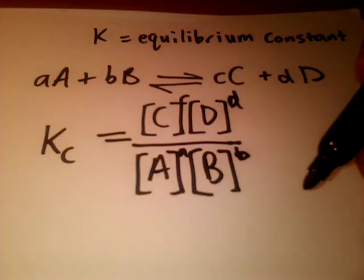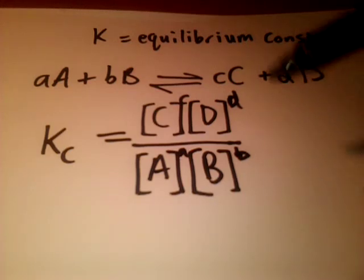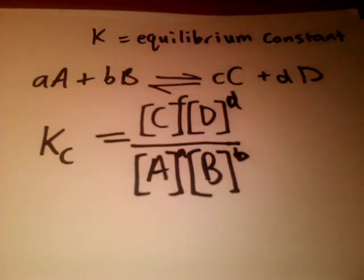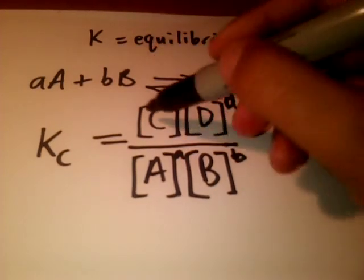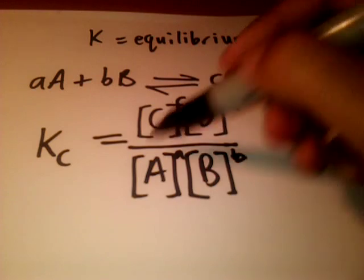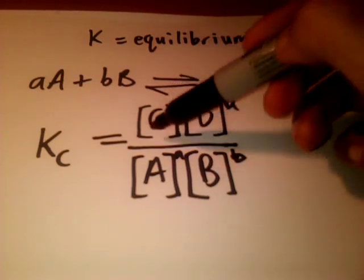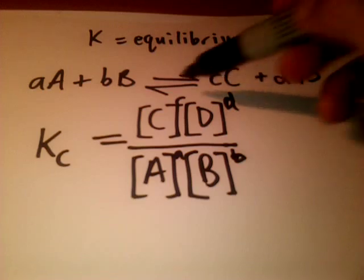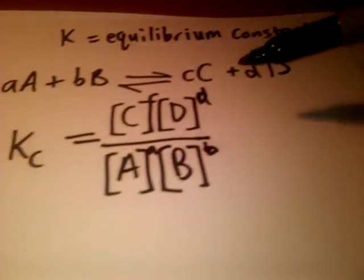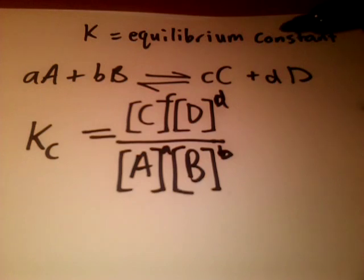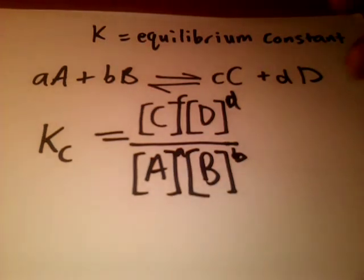This is the way to work out Kc: you have the concentrations of the products multiplied by each other, taking into account the number of them which we've included as these powers, over the reactants at the bottom. So Kc = [C]^c[D]^d / [A]^a[B]^b.